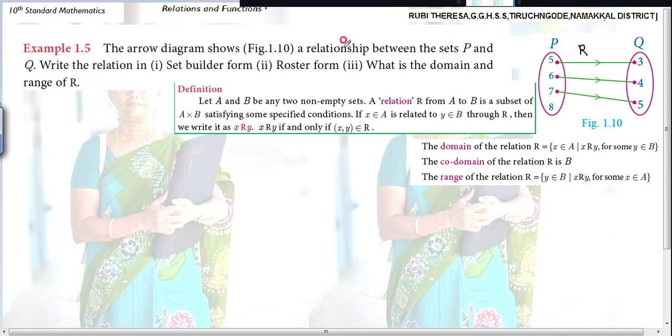First you should know what is meant by relationship. You should know the definition, then only you will be able to write it in set builder form and roster form. We already know that A and B are two non-empty sets, for Cartesian product we studied like this.